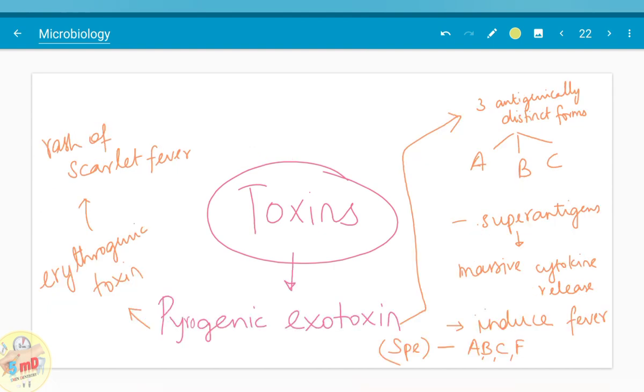The next toxin is pyrogenic exotoxin. The name pyrogenic exotoxin means that it induces fever and it is also known as erythrogenic toxin. This name was given because it was responsible for the rash of scarlet fever and this toxin is currently named as streptococcal pyrogenic exotoxin SPE and three distinct strains have been seen. A, B, C, F are the antigenically distinct SPE noted.